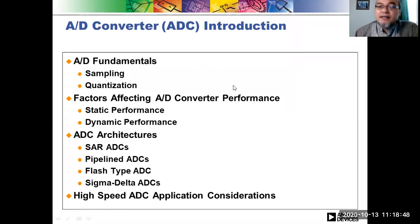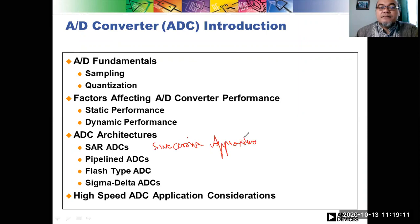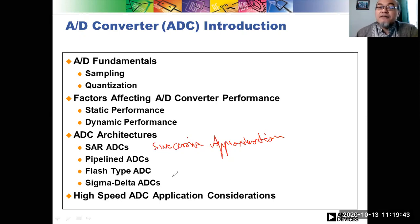We will also study factors affecting ADC performance, both static and dynamic. Then we'll cover ADC architectures: successive approximation register (SAR), pipeline conversion, flash type — which is one of the quickest algorithms requiring very fast responding instruments — and sigma-delta ADC, which is now quite popular in the market. Finally, we'll consider some applications of high speed ADC.